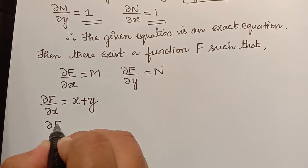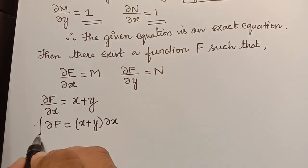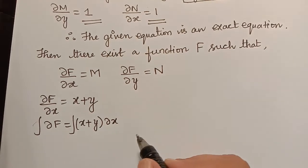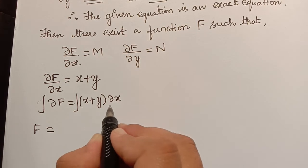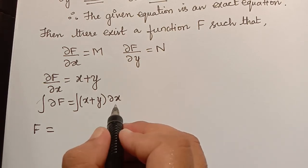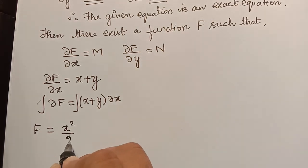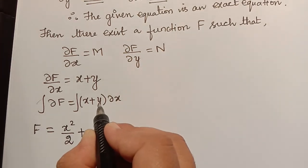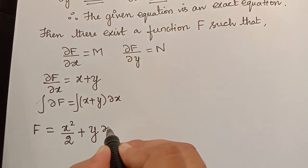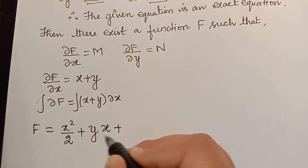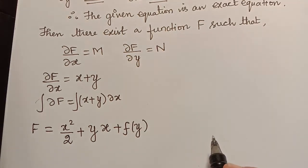We can write this as dF = (x + y)dx. Integrating both sides partially with respect to x: integrating x gives x²/2, and y is treated as constant so it comes as yx. We add a function f(y), where f(y) is independent of x. So F = x²/2 + yx + f(y).